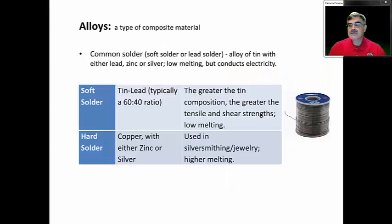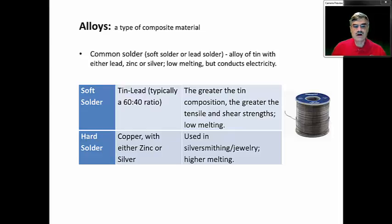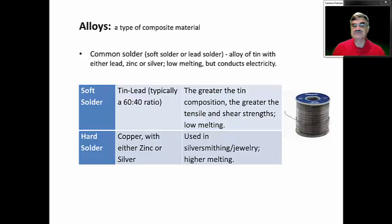Another alloy you've probably heard about is solder, which can be either soft solder or hard solder. Soft solder is an alloy of tin and lead, typically in a 60-40 ratio, used in electrical work for soldering things together. The greater the tin composition in solder, the greater the tensile strength. Hard solder is different — it is based on copper with either zinc or silver, used in silversmithing, and has a fairly high melting point.